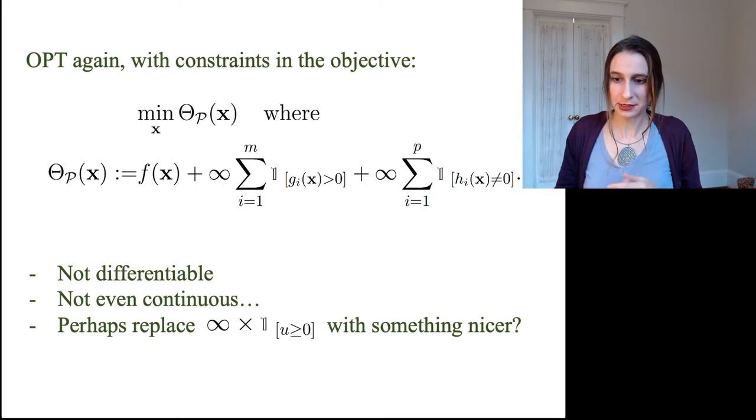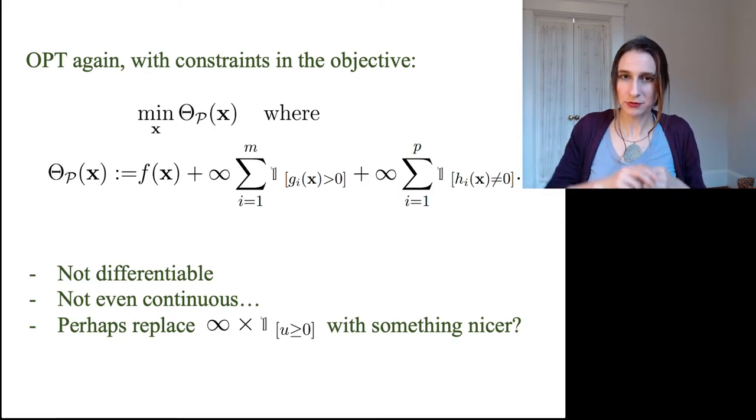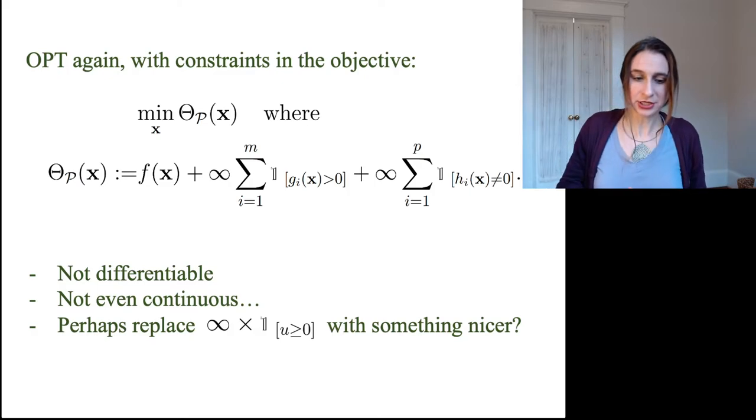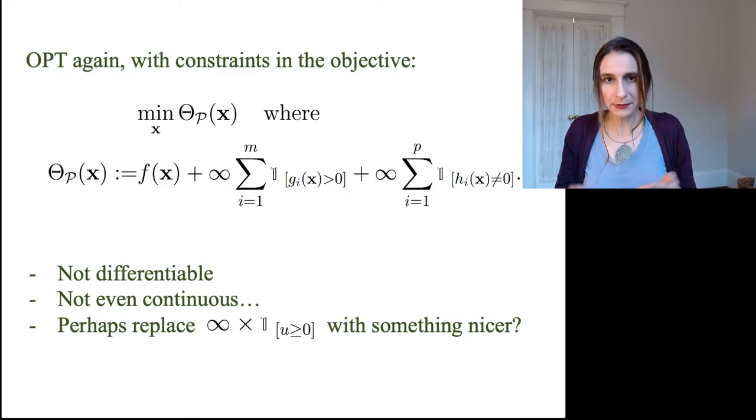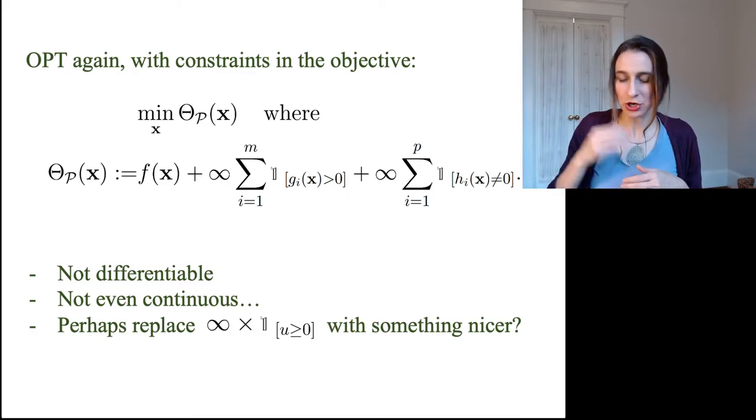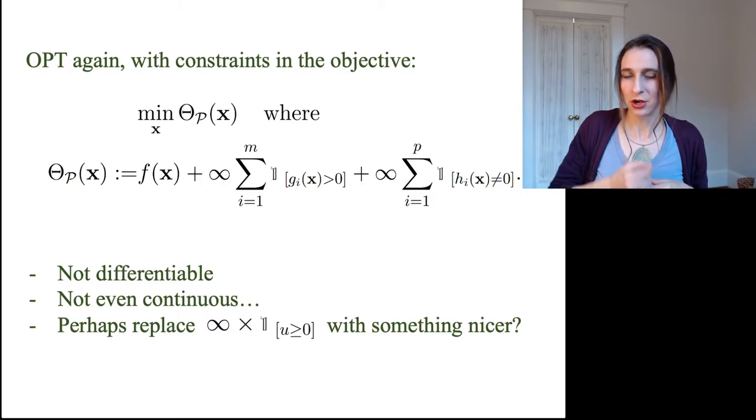So when you minimize it, you're going to not get infinity, and it's going to give you the minimum value of f of x for which all of these constraints, all the h constraints, all the g constraints are obeyed.